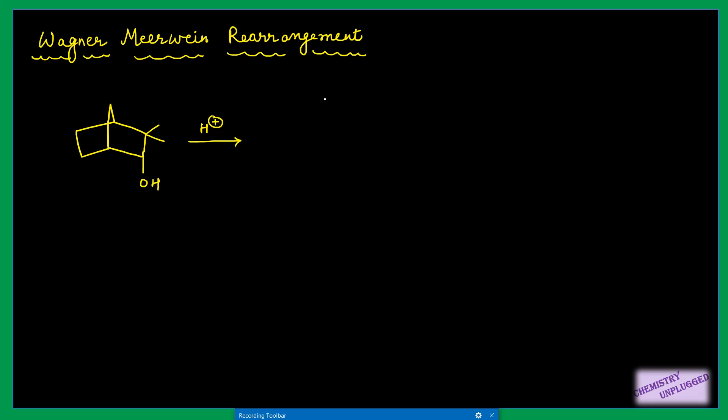Basically, whenever you want to stabilize your carbocation — you want to get a stable carbocation after the migration of an alkyl group — it is called the Wagner-Meerwein rearrangement. In short, it is the migration of an alkyl group to a cationic center. We want to generate a stable carbocation through migration. Tertiary carbocation is more stable than secondary, and secondary is more stable than primary.